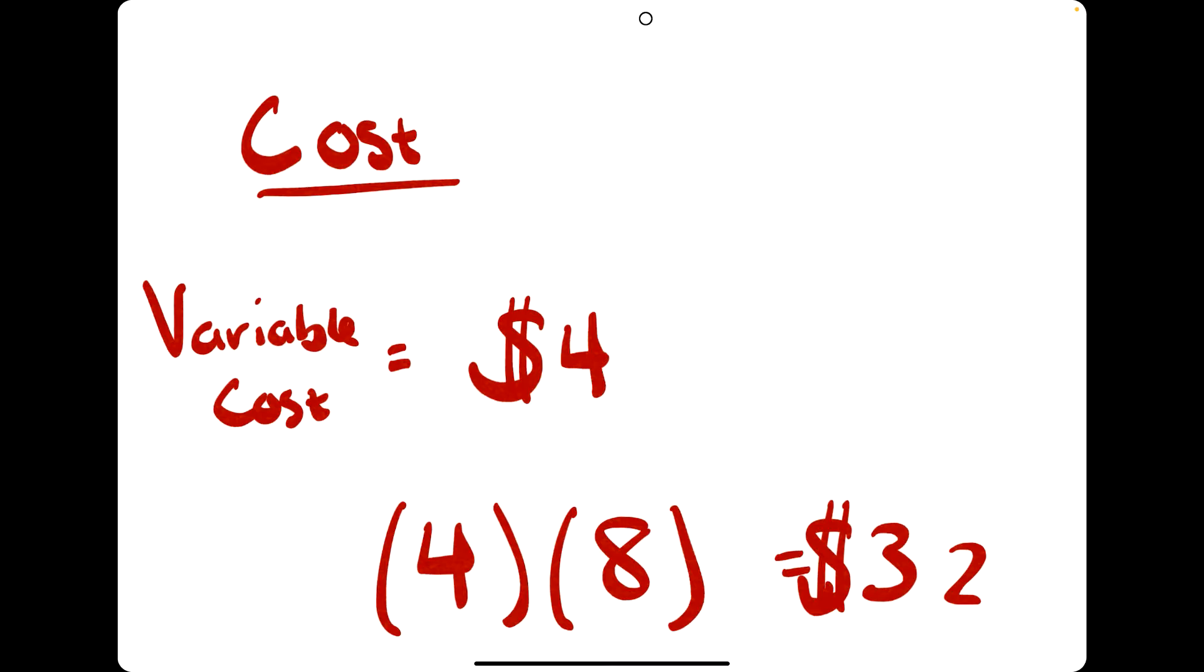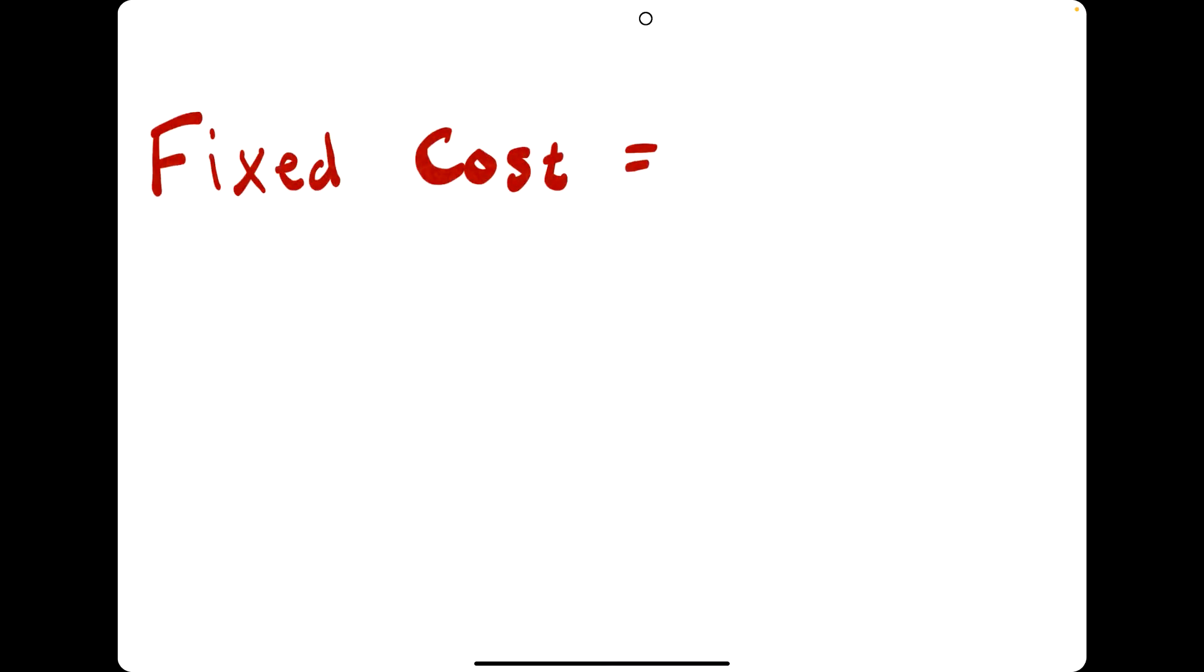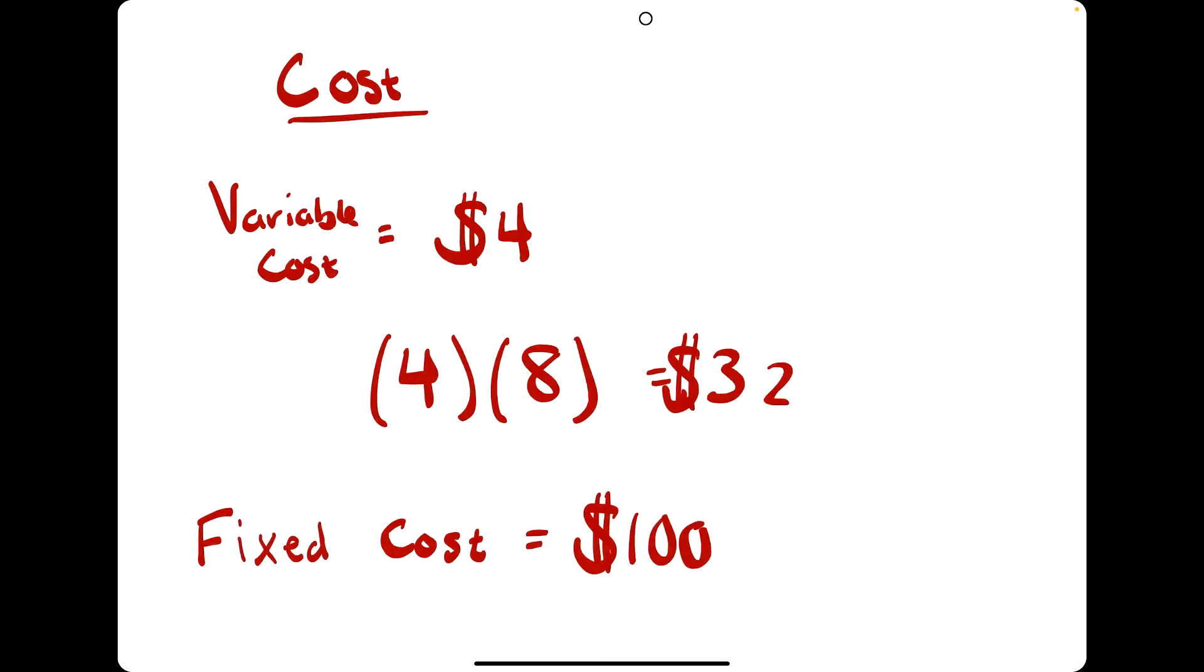On top of that $32 for the mugs, the space that you rented out just to make the mugs charged you a fixed cost of $100. So how much did mug making this week cost you in total? That's right. 32 plus 100 is 132.